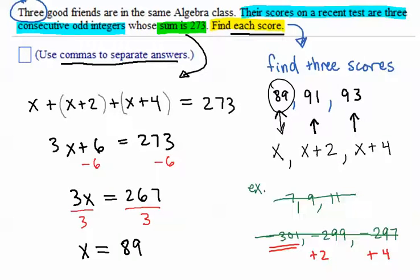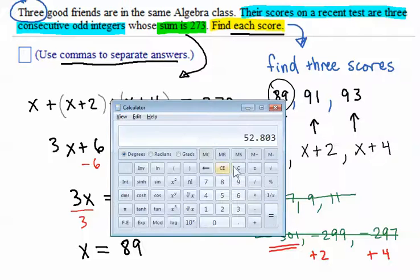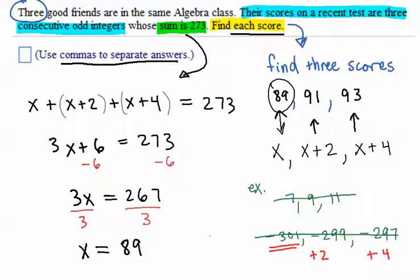And I'm lazy, so I'm going to go ahead and just verify my answer here. 89 plus 91 plus 93, 273, forming the sum that we said it should. You can pause. You can rewind. There's my answer. Thank you very much.